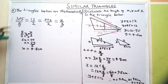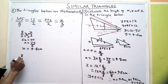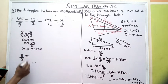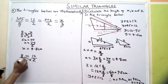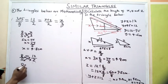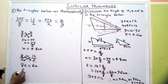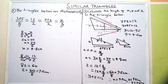To get Z, equate 8 over 5 equals 12 over Z and cross multiply: 8Z equals 5 times 12, which is 60. So Z equals 60 divided by 8, which gives me 7.5 cm.